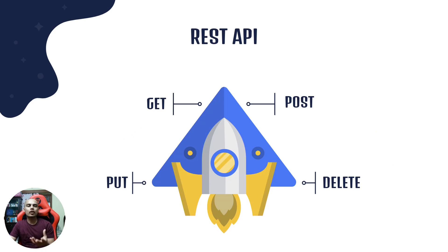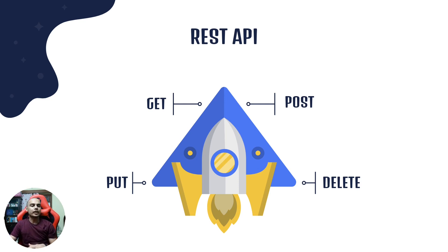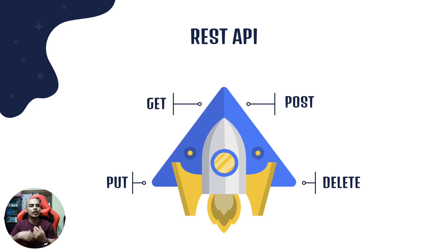Once you understand the basic ecosystem of Flutter, the next thing is to develop a dynamic app. Up until now we are making apps with static information — now it's time to make our app dynamic. In order to do that we need to load content from a remote database or remote server, and for that we need to use APIs. First you need to understand the concept of REST API. If you have already used REST APIs in another programming language you can skip this step, otherwise learn the basics of how APIs work.